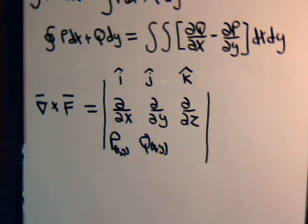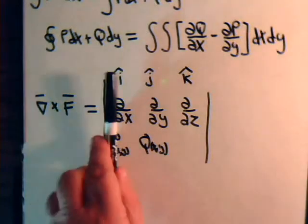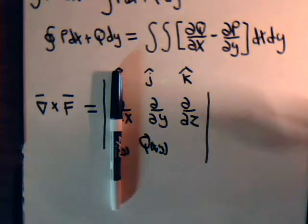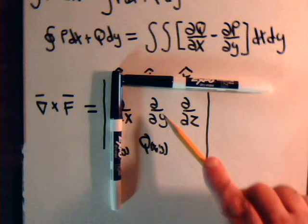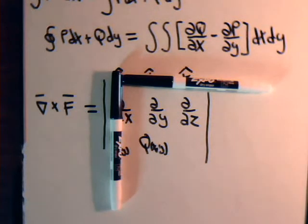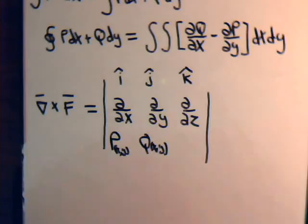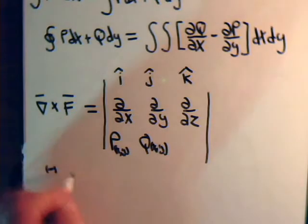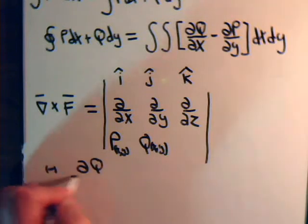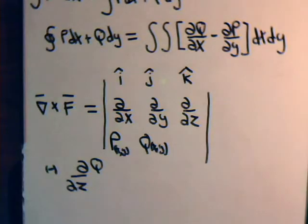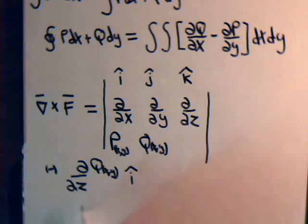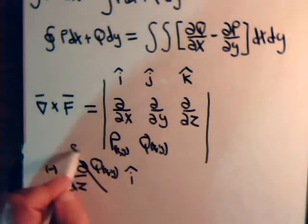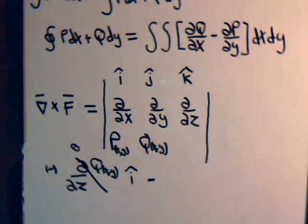For the i component of the curl, we cover up the first column and first row to get a 2×2 sub-determinant. This gives zero minus the partial of q with respect to z. But q is only a function of x and y, so this partial derivative with respect to z is zero. Therefore the i component of the curl is zero.